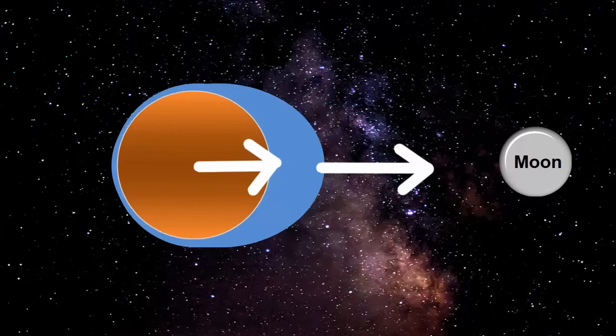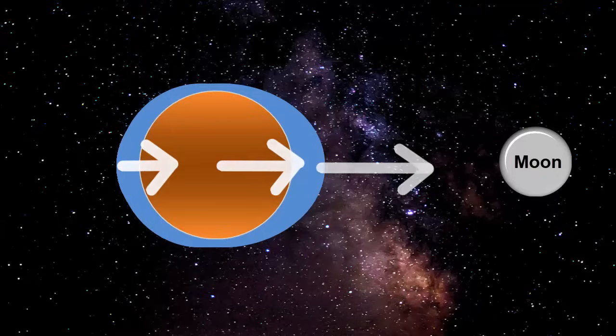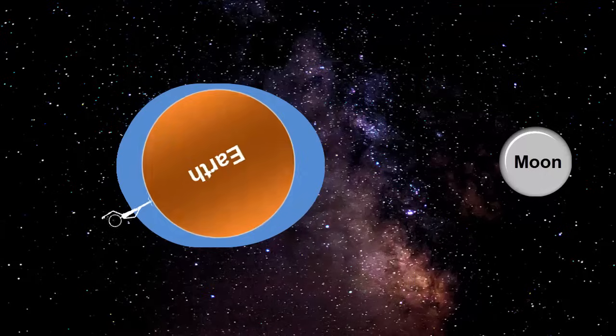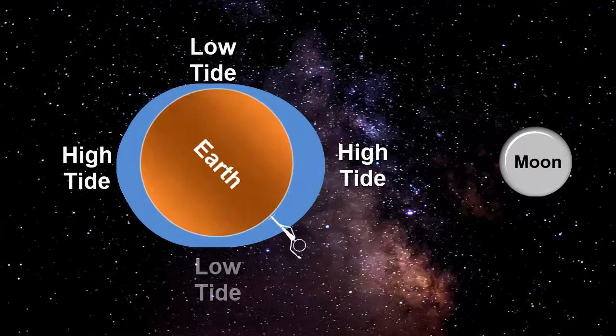The Earth also moves towards the moon, but not so much as it's further away. Finally, the far side ocean moves towards the moon least because it's farthest from the moon. These movements due to gravity create two high tides and two low tides as the Earth rotates through 24 hours.